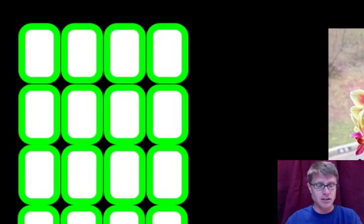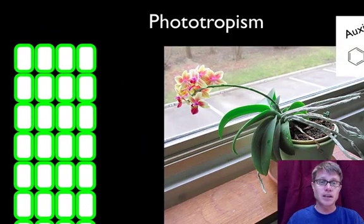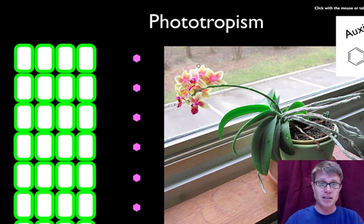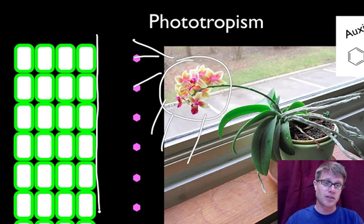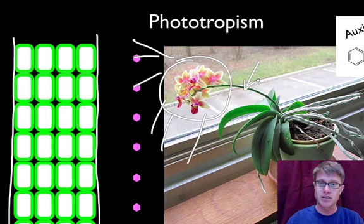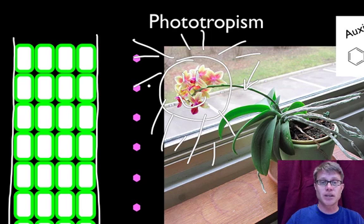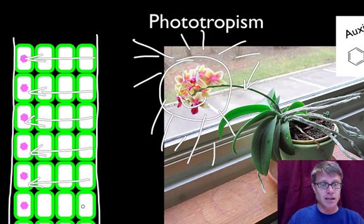What auxin really does is it loosens up the cell wall, and so when you loosen up the cell wall, as water flows into the plant, the cell actually gets larger. So let's say I put the sun over on this side, and this represents the stem of a plant. The sun is over here. What auxin does is it will move inside the plant — auxin will always move away from the light in positive phototropism. So it's going to move away from the light in this direction.